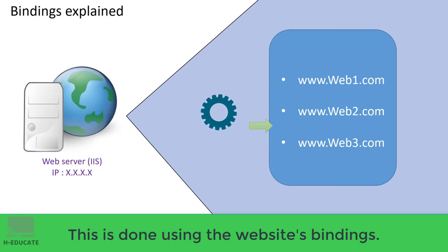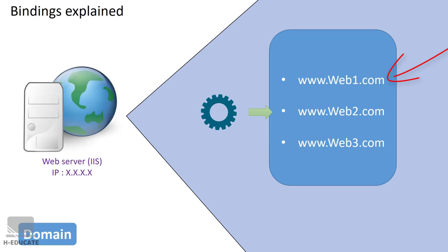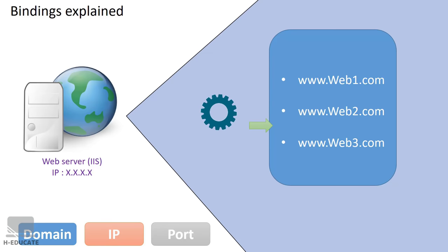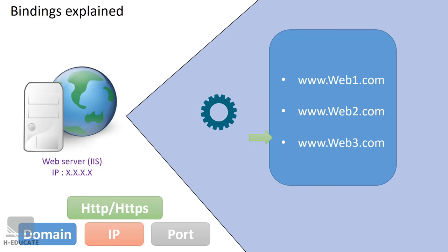We can use multiple parameters to identify websites on the same server: the domain name or host name (like web1.com), the IP address, or even the port number. IIS also determines whether the connection is secured using HTTPS by looking at the binding configuration for that website. I hope you now understand how bindings work in general.